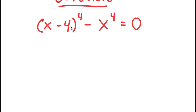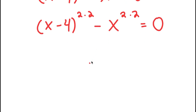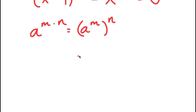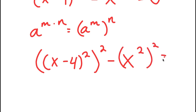From here, I rewrite x minus 4 to the power of 4 as x minus 4 to the power of 2 times 2, and similarly x to the power of 4 as x to the power of 2 times 2. Using the exponent rule a to the power of m times n equals a to the power of m to the power of n, I get x minus 4 to the power of 2, all to the power of 2, minus x to the power of 2, all to the power of 2, equals 0.